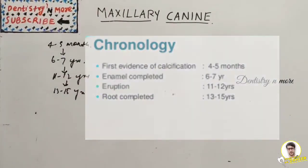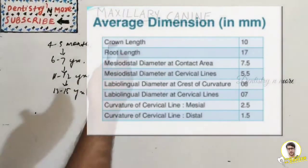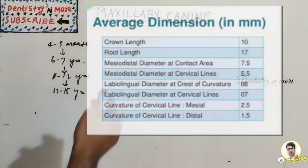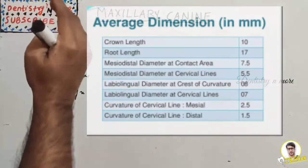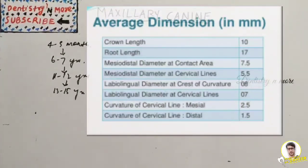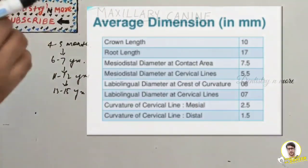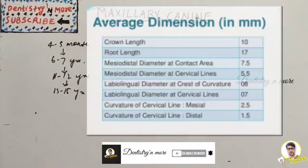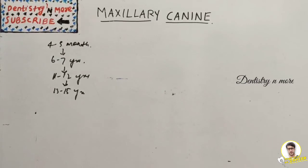The dimensions are: crown length 10mm, root length 17mm (very long), mesiodistal diameter at contact area 7.5mm, cervical line 5.5mm, labiolingual diameter 8mm, cervical line 7mm. Curvature of the cervical line: mesial is 2.5mm and distal is 1.5mm. The mesial side is always deeper than the distal — this helps differentiate right from left canine in practical examinations.